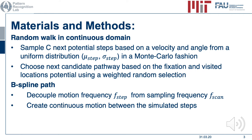The next candidate pathway is then chosen based upon the fixation and visited locations potential using a weighted random selection. To decouple motion frequency from sampling frequency, we interpolated the path using a B-spline interpolation to create continuous motion between the simulated steps.